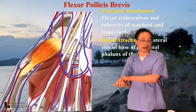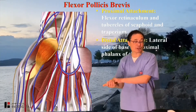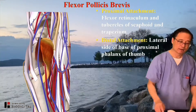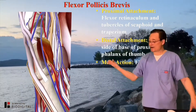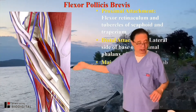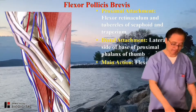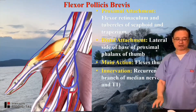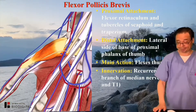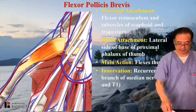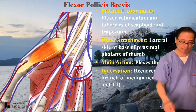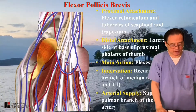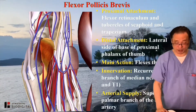But this time the attachment is oriented a little bit towards the palm side. The main action is to flex the thumb. Innervation: recurrent branches of the median nerve, C8 and T1. Arterial supply: superficial palmar branches of the radial artery.